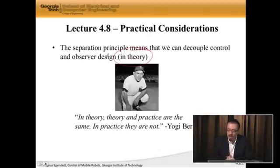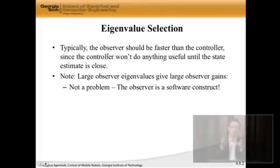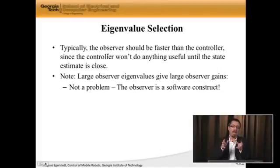Now this is rather profound and it has some implications on the fact that just because the theory tells us something, we need to be aware of certain things. The first thing we need to be aware of is the controller is really only useful once the estimated state is close to the actual state. Meaning that the controller doesn't really do anything useful until the observer has converged. So what we want to do is make sure that the observer converges quickly. What that means is that we want the observer to be faster, which in turn means that these eigenvalues that we're picking should be larger for the observer than the controller.